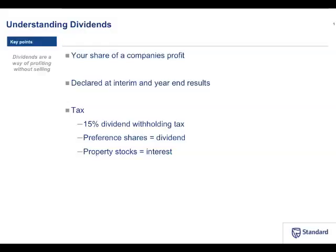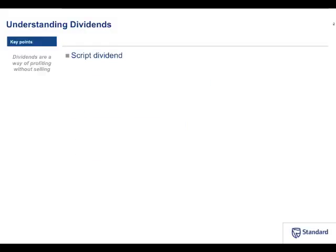There is no further tax consideration beyond that. Preference shares do pay dividends, so they are subject to the normal 15% dividend withholding tax. Importantly, property stocks pay interest as a rule, so the interest is paid to you in its entirety, but at the end of the year when doing a tax return you need to declare it as interest, and beyond the threshold that interest is then taxable.